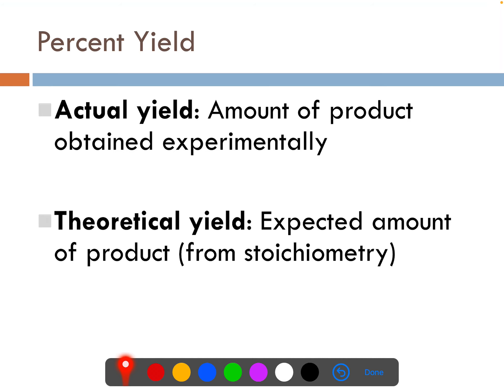The actual yield is the amount of product obtained experimentally. Sometimes we even call this the experimental yield. This is what you actually get if you actually run an experiment. The theoretical yield is the expected amount of the product. This is what you would expect to get by using your periodic table and running a stoichiometry problem. Everything that we do in class on all the worksheets, those are all theoretical yields because you're not actually running any of them.